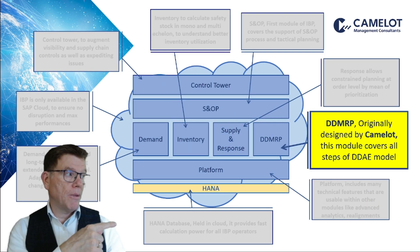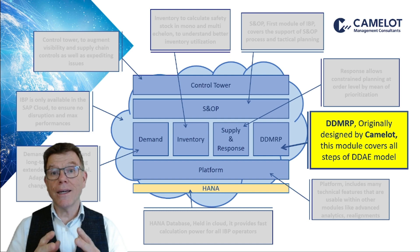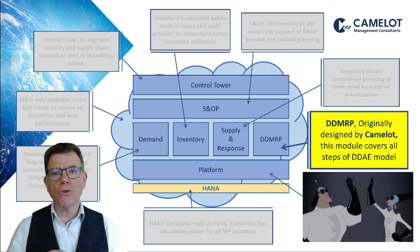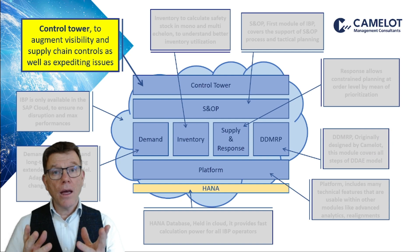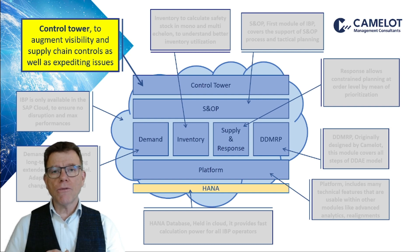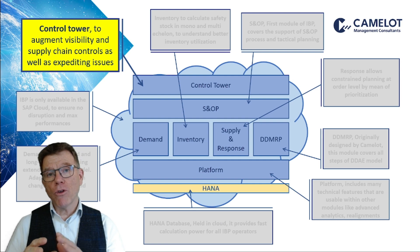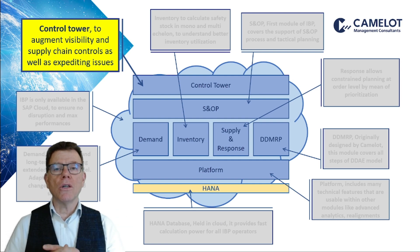Next is DDMRP. DDMRP was designed by Camelot initially as an extension to IBP, and later SAP adopted this module to become the standard and official DDMRP proposition in IBP, according to a partnership between the two companies. Last for today is the Supply Chain Control Tower. It is not a functional module — it is more like added reporting and alerting features, which allow extended visibility on your supply chain, as well as capabilities to better follow the expediting of issues against your supply chain.